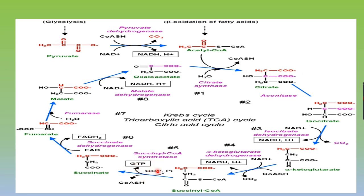Succinyl-CoA undergoes a phosphorylation step, where energy is released. GDP undergoes phosphorylation with inorganic phosphate to form GTP, and succinyl-CoA is converted into succinate with release of coenzyme A. The enzyme is succinate thiokinase (also called succinyl-CoA synthetase). One GTP is equivalent to one molecule of ATP, which is formed from GTP by phosphokinase.